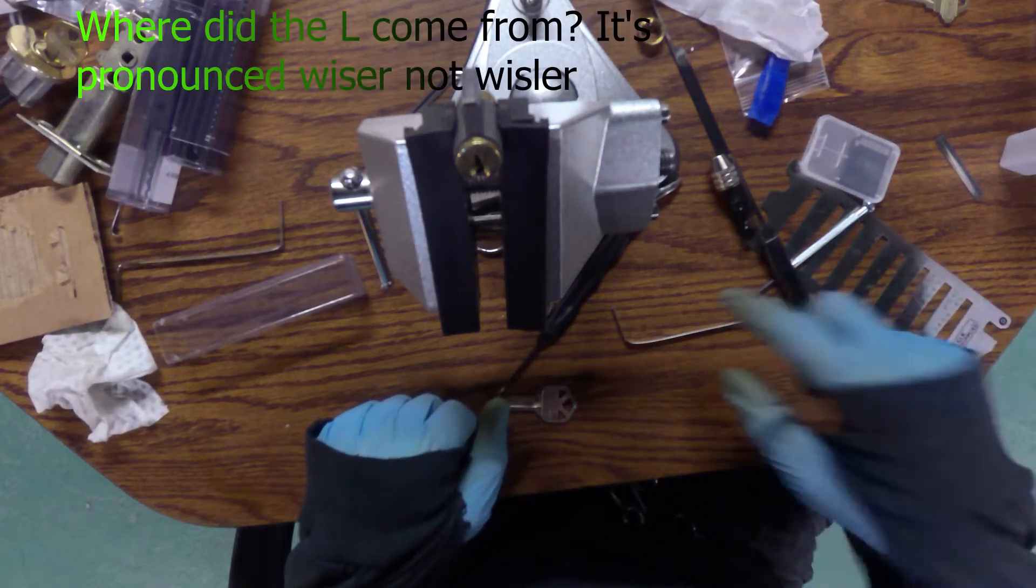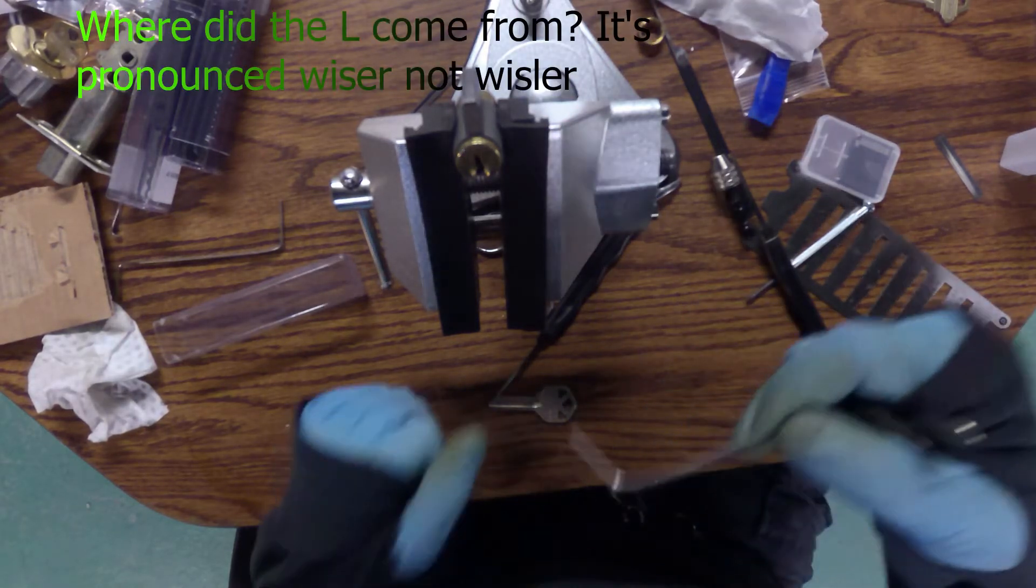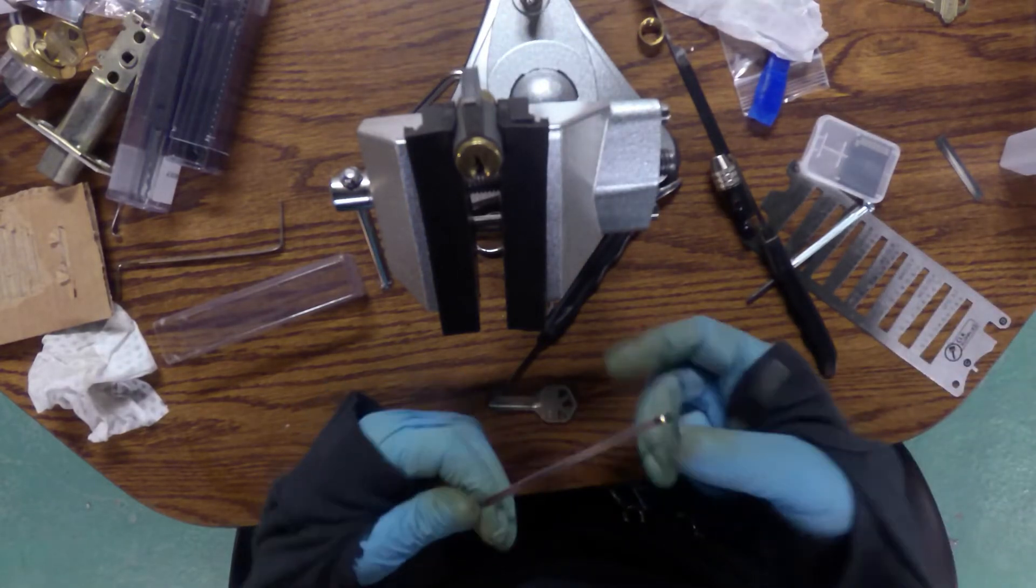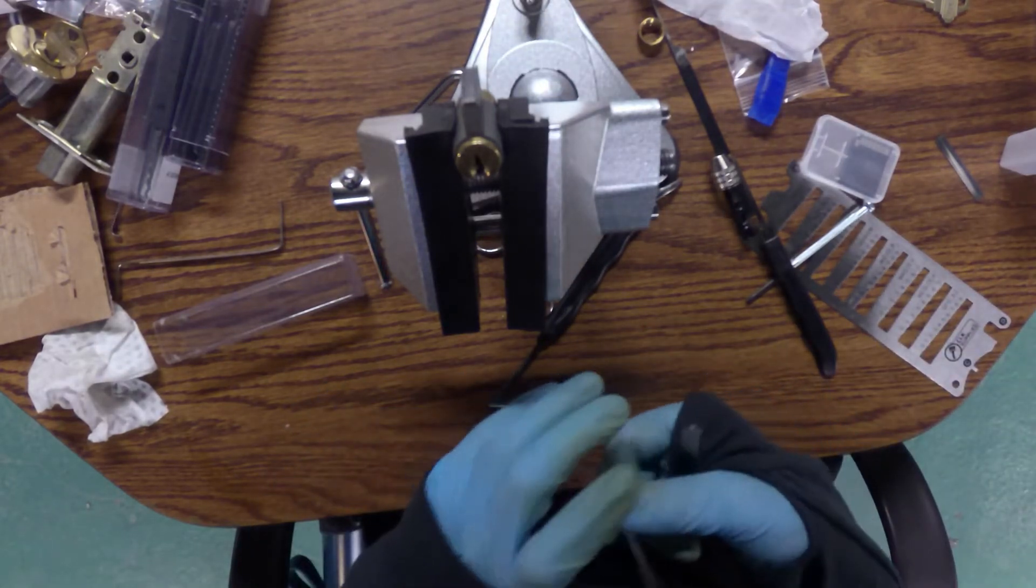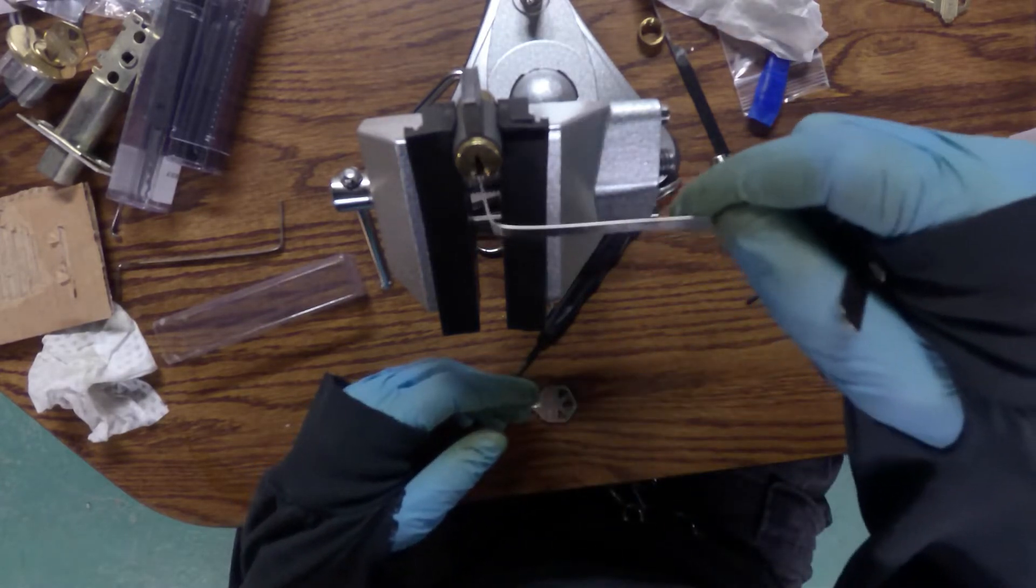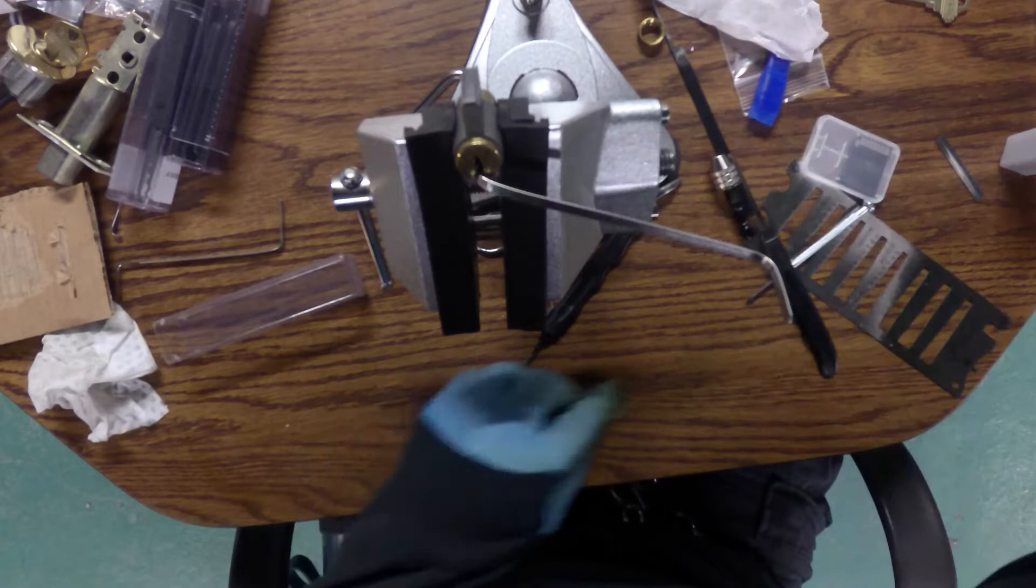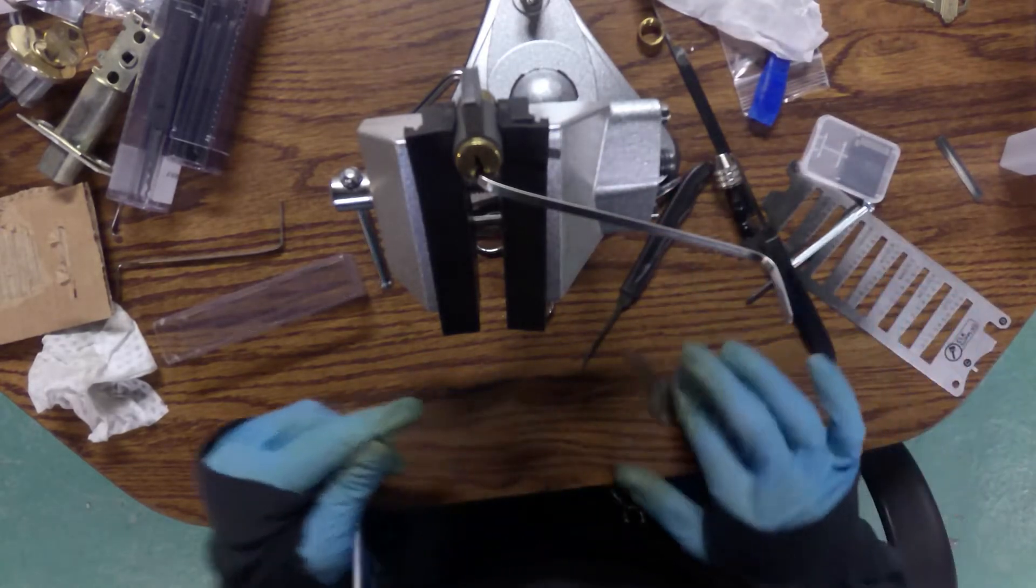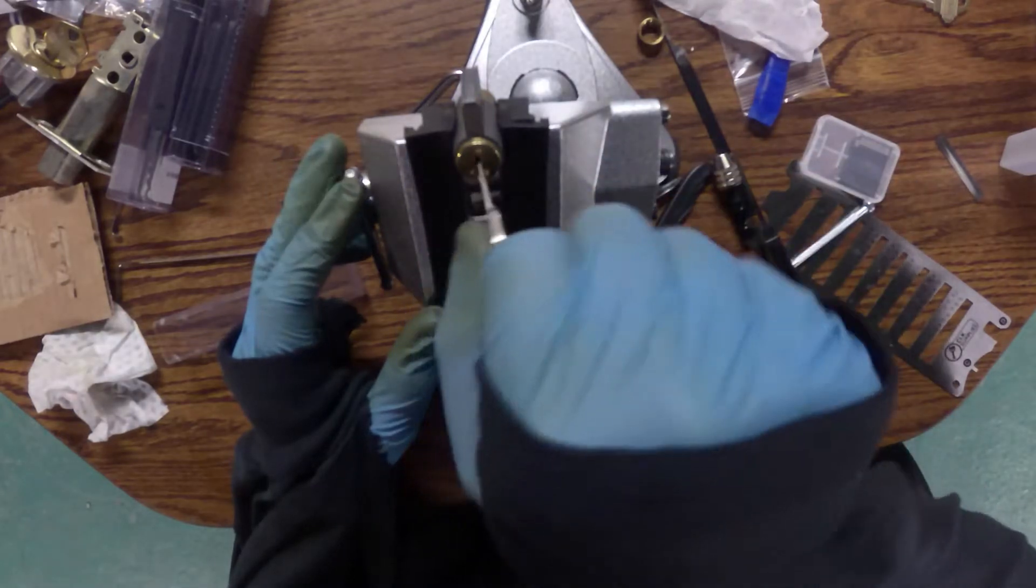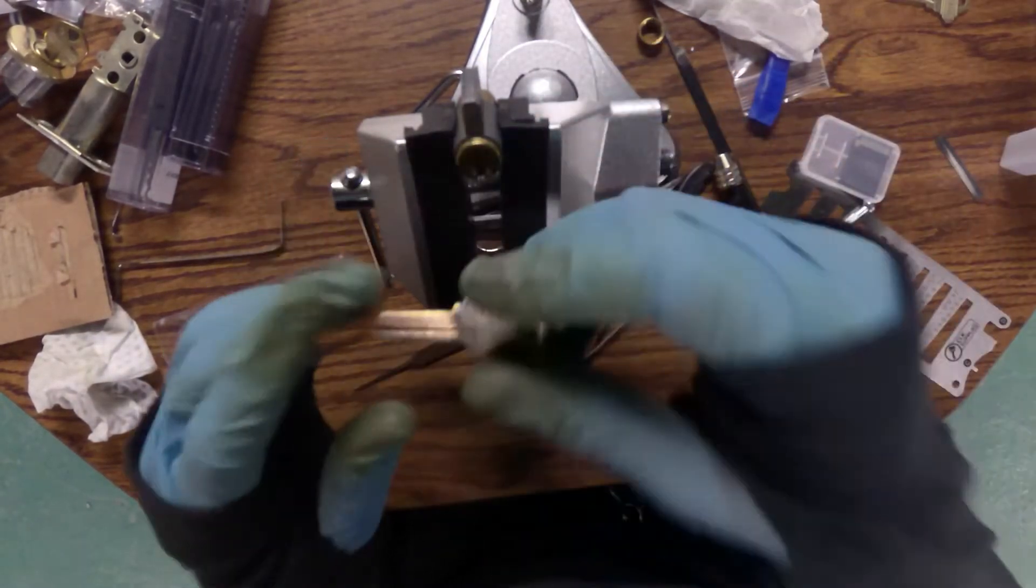So I pulled the core out of the Weissler lock I got from Habitat for Humanity Restore and figured I would give it a pick. The one thing I'm a little disappointed in though is that it appears to be a Kwikset lock.